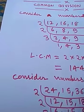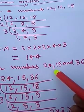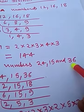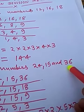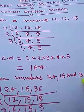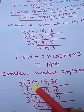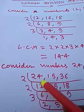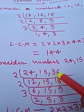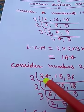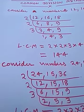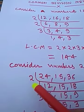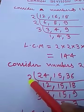Now consider the numbers 24, 15, and 36. How can you find the LCM by common division method? We shall write the numbers in a row: 24, 15, 36. Now select the number which will divide at least two of them, so we divide by 2.